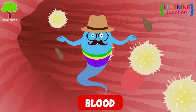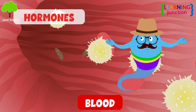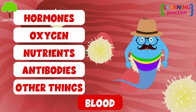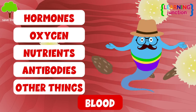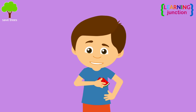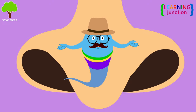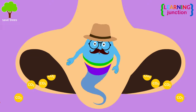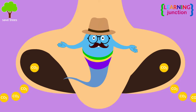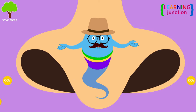Blood is the transport media of nearly everything within your body. It transports hormones, oxygen, nutrients, antibodies, and various other things needed to keep the body healthy and fit. Oxygen enters into the bloodstream through small membranes in the lungs that absorb oxygen as it is inhaled. As the body uses the oxygen and processes nutrients, it creates carbon dioxide, which your lungs expel as you exhale.